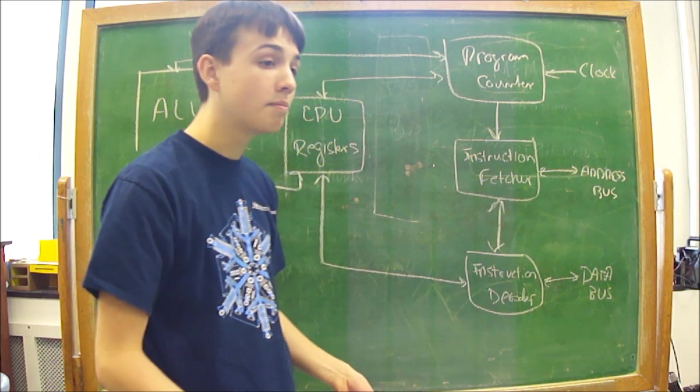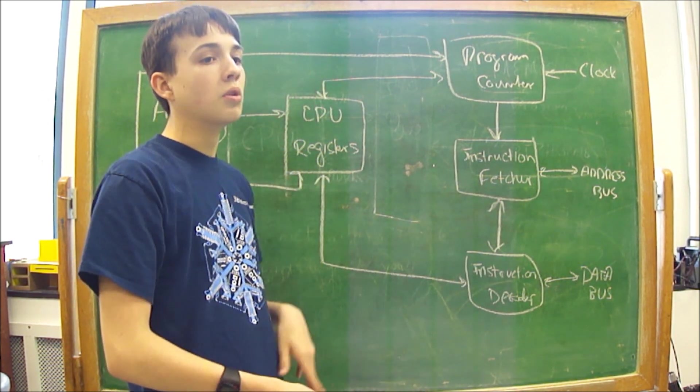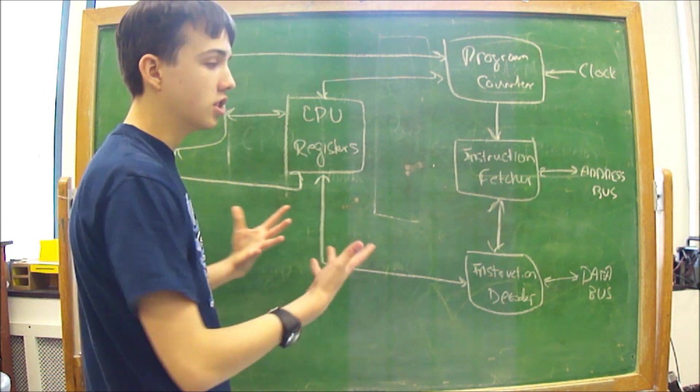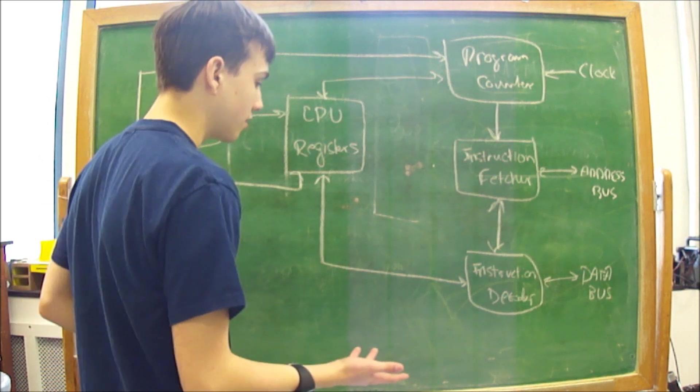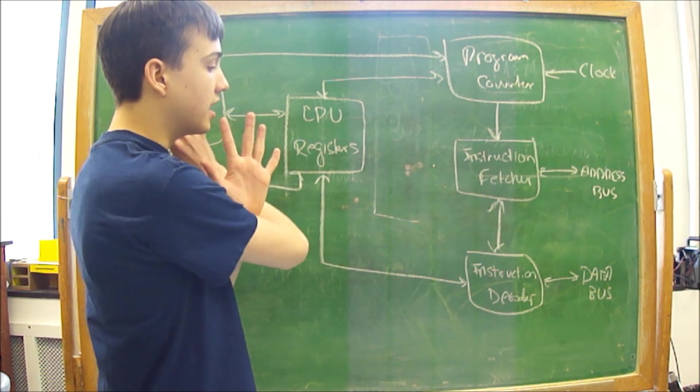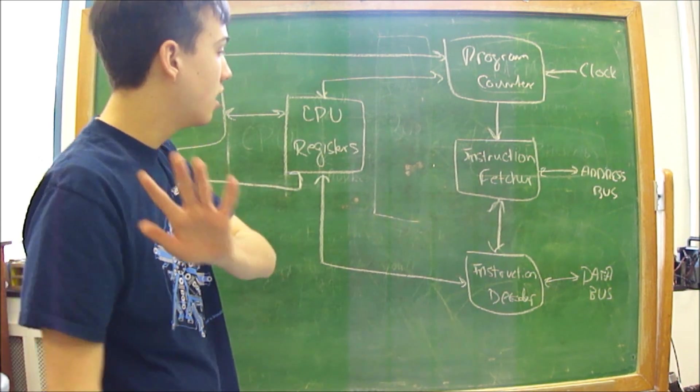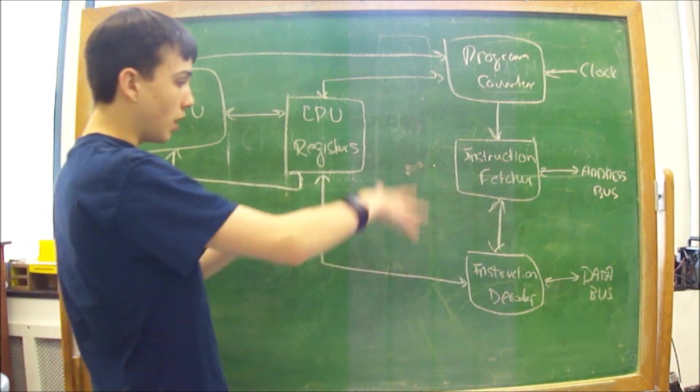Now the instruction decoder's job is sort of like the CPU of the CPU. It's what actually makes the decisions for the unit. So it sends data to everything else. It'll send data to other components.